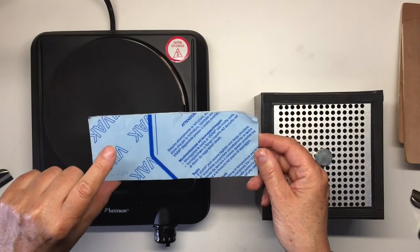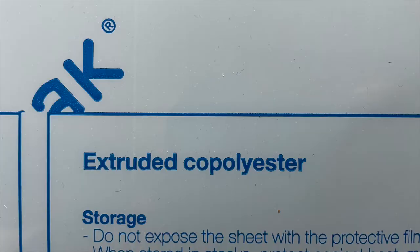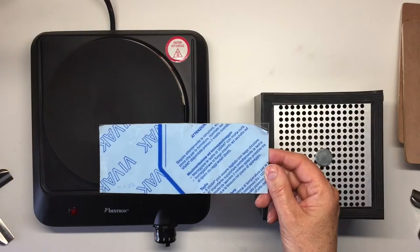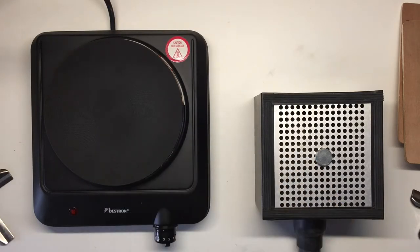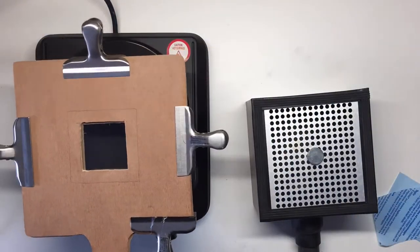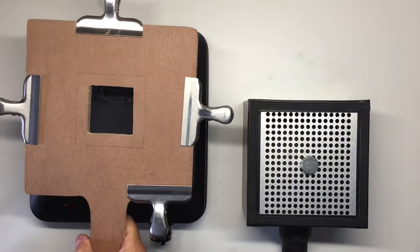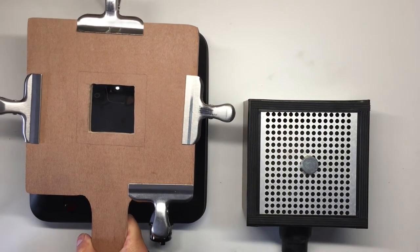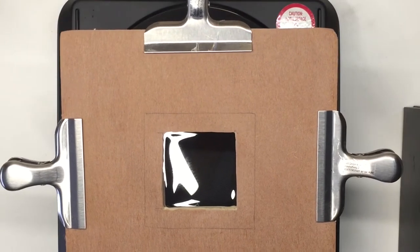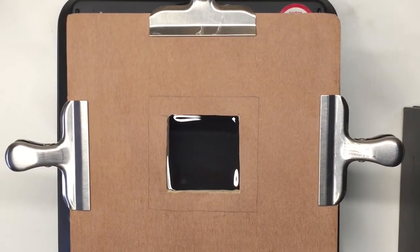So, on to the next plastic I had in my stash. This is an extruded copolyester called Vivak. The sheets are suitable for thermoforming at temperatures between 120 degrees Celsius and 160 degrees Celsius. And for those of you who do Fahrenheit, that's between 248 degrees Fahrenheit and 320 degrees Fahrenheit.